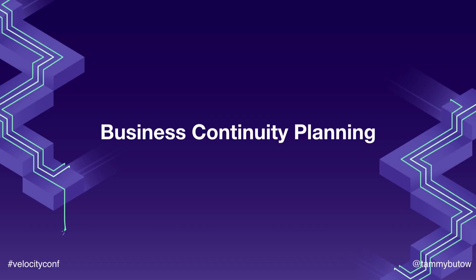Business continuity planning is really important, but often it's a little bit old school. You might run your experiments, but you wouldn't have them automated, you wouldn't run them regularly — you might only test your BCP once a year. Chaos engineering is all about doing this frequently, all the time, actually running the experiments, automating them, continuing to run them, and thinking of new experiments to add. So think about it in relation to BCP, but it's much more advanced.